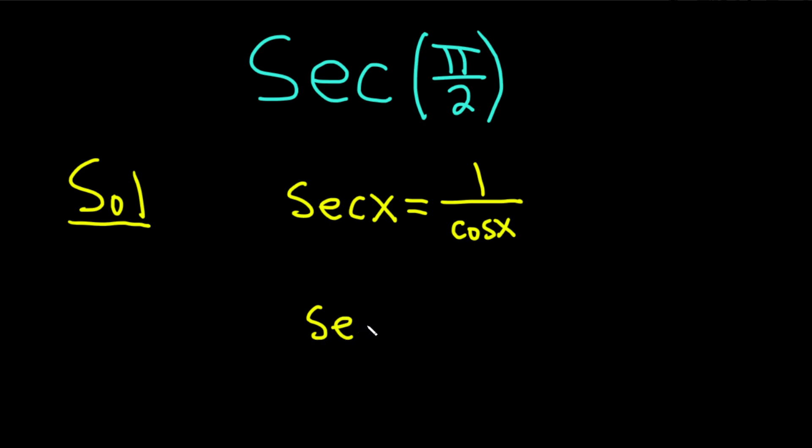So the secant of π/2, if we were to put x into this equation, we would get 1 over the cosine of π/2.